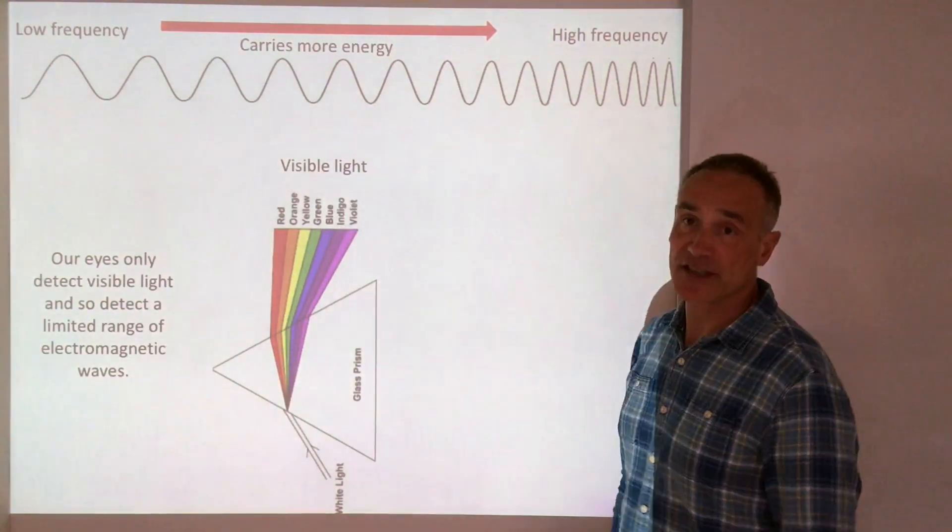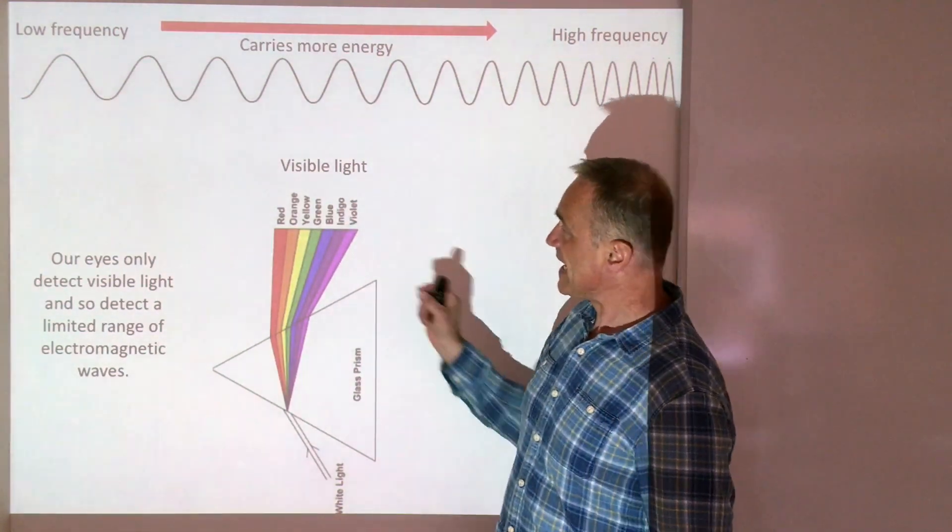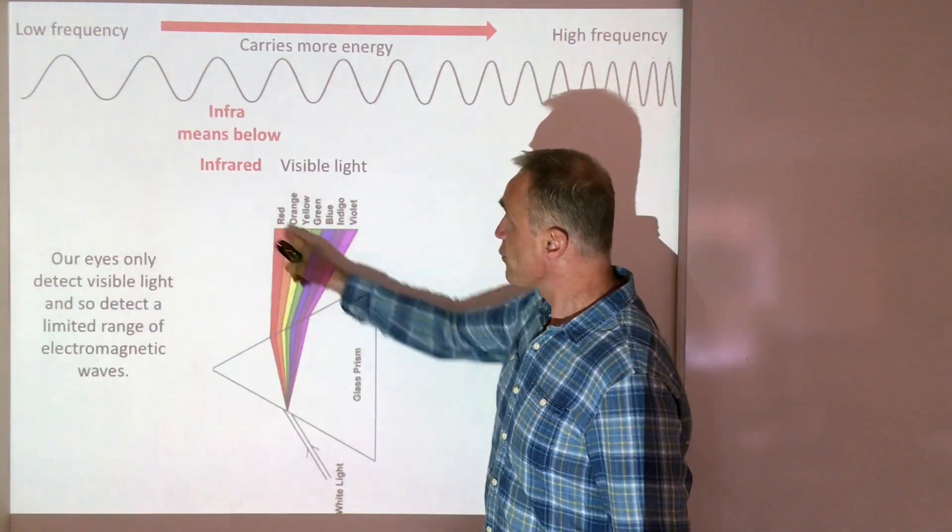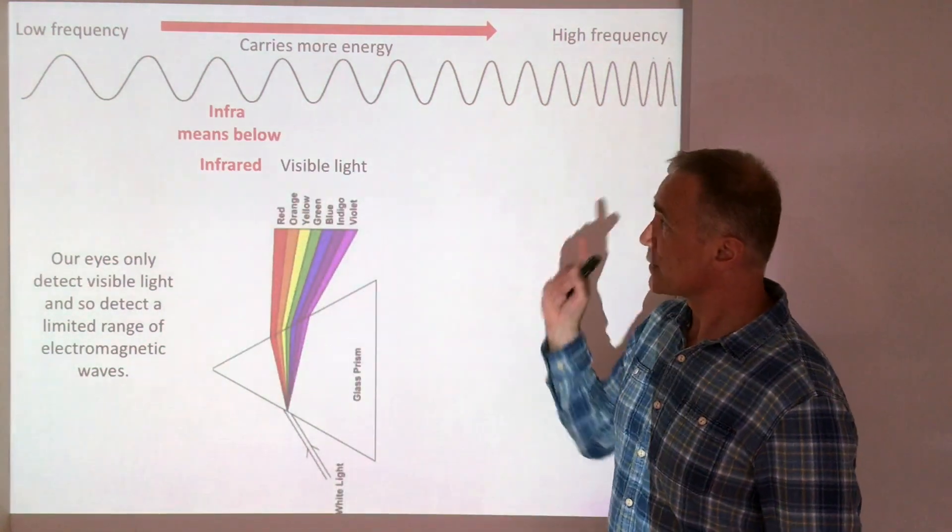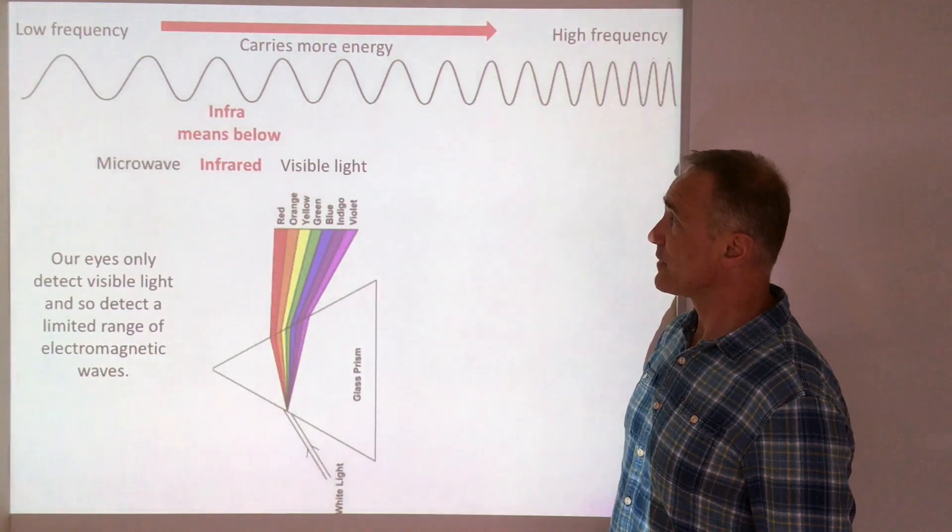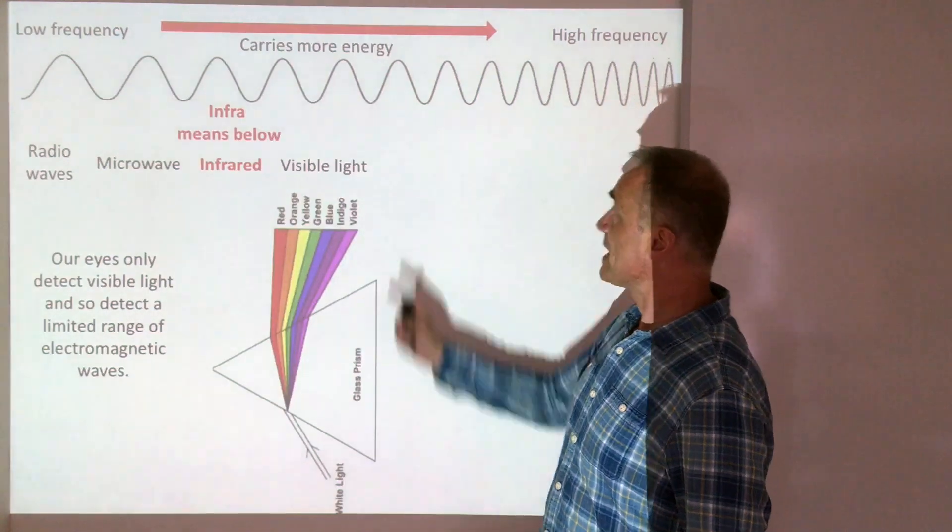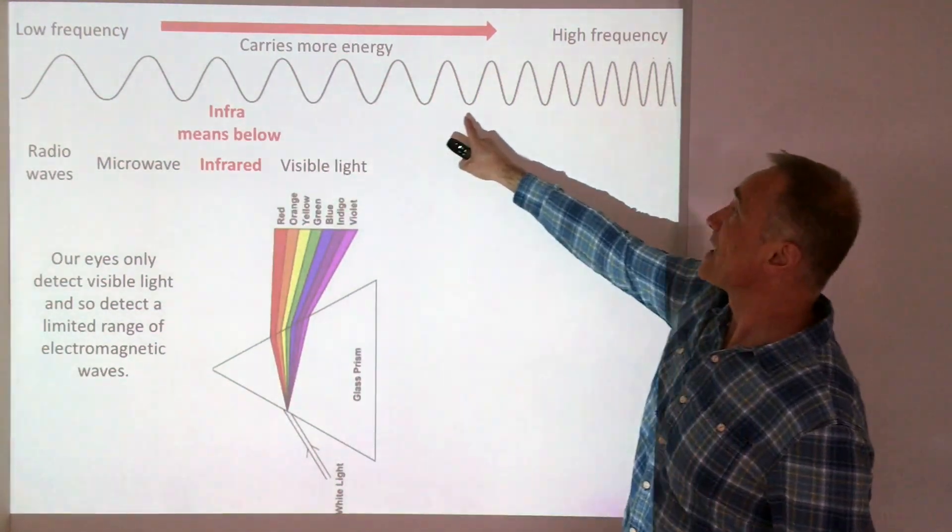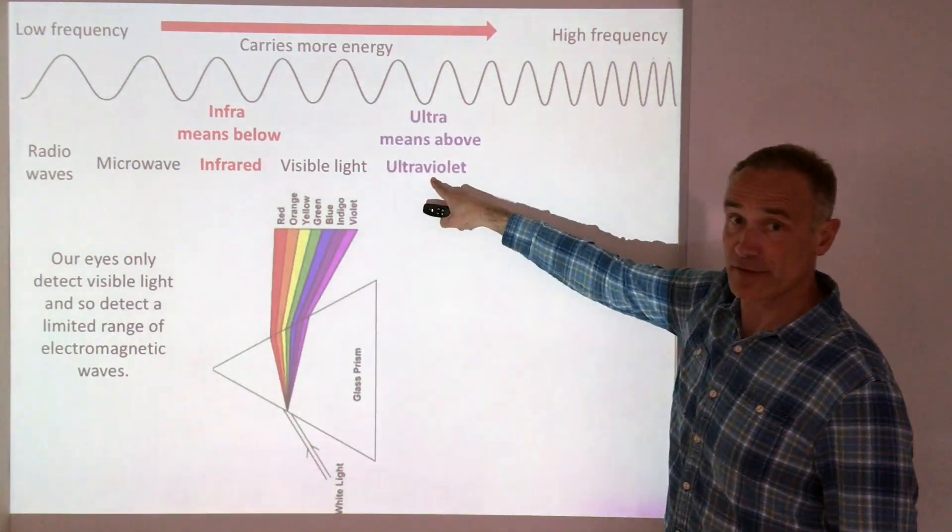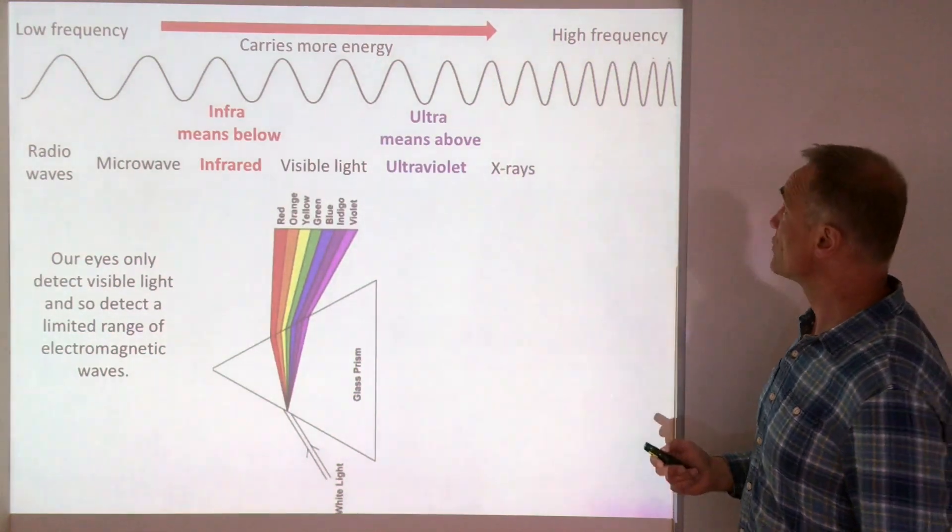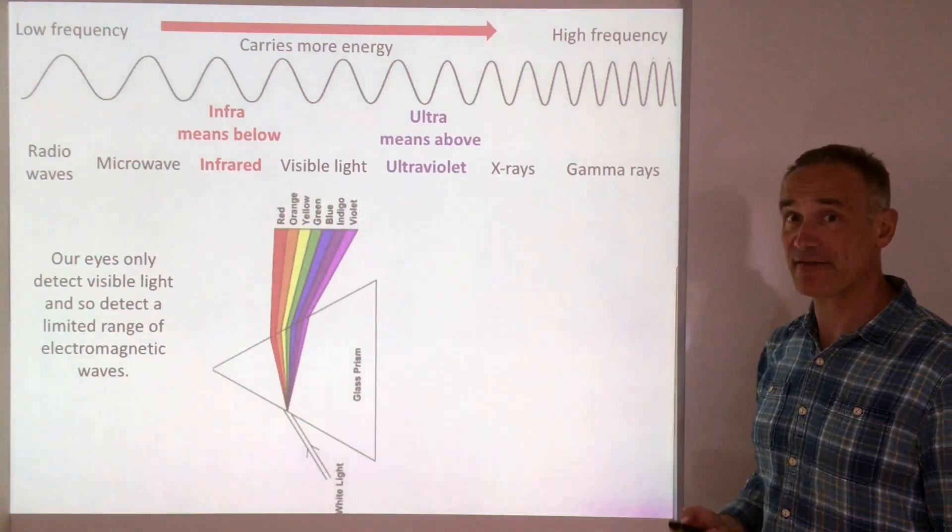In order to sort out the other types of electromagnetic radiation, I always like to look at visible first because infra means lower than, and below red is infrared. It's got a lower frequency and a larger wavelength. Going back towards the lower frequencies, we've got microwave and finally the biggest wavelength is radio wave. As we move this way, we carry more energy. Ultra means above, so above violet we get ultraviolet. Then we have X-rays that carry more energy and gamma rays that have the highest frequency, the shortest wavelength, and carry the most energy.